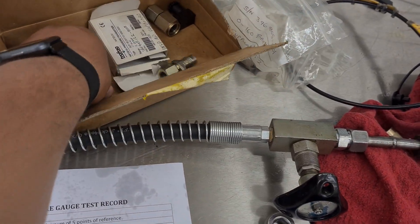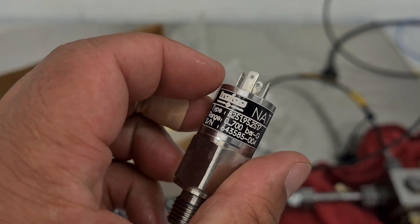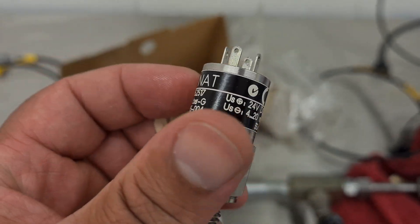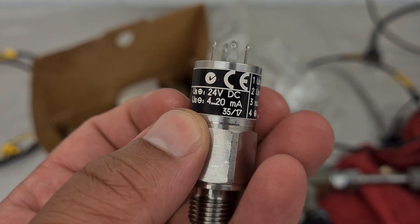They measure pressure. Yes, so this is a 700 bar one and it gives a signal 4 to 20 milliamps using 24 volts DC.